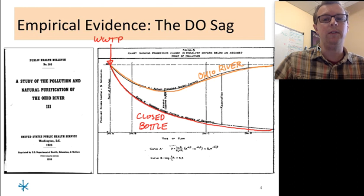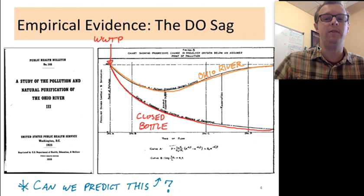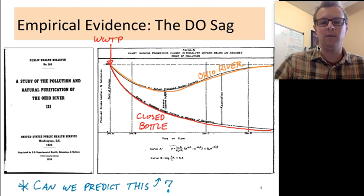But in the real world they observed something more like this, the orange line where I've labeled it Ohio River. And so there's clearly some other processes happening here besides simply the decomposition of organic matter using up oxygen, and our motivation for the next few lectures will be essentially can we predict this? Can we manage that sag in dissolved oxygen downstream of a wastewater treatment plant? Can we predict how bad it will be? Can we manage our outputs in a way that keeps that sag at a reasonable level?